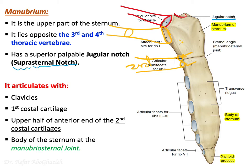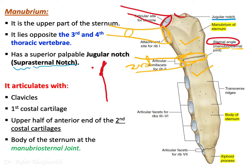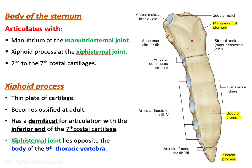The manubrium articulates with the body of the sternum at the manubriosternal joint. This joint is also called the sternal angle. Looking at the sternum laterally, there is an angulation here: the manubrium and body meet at an angle — this is the sternal angle, a very important landmark.